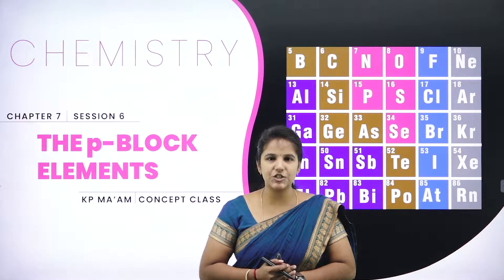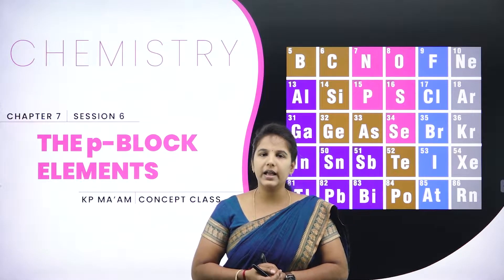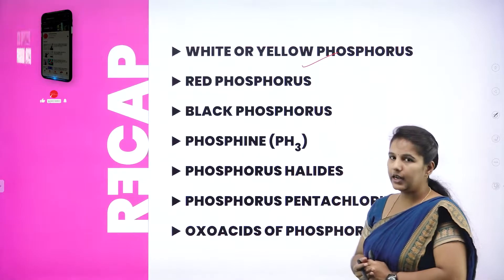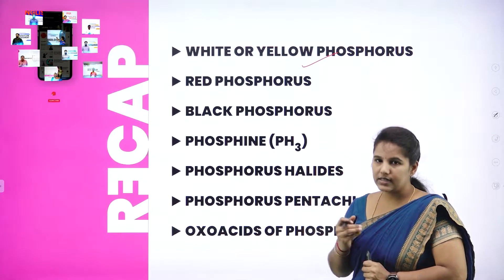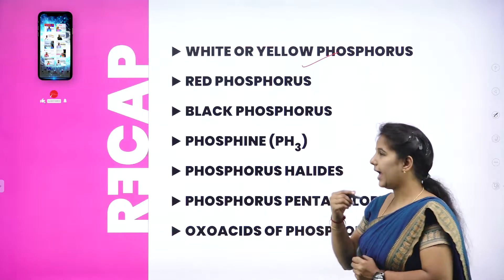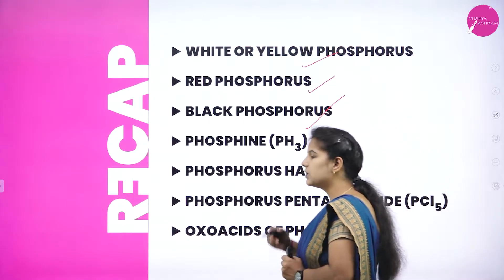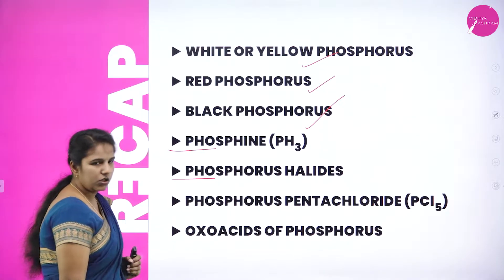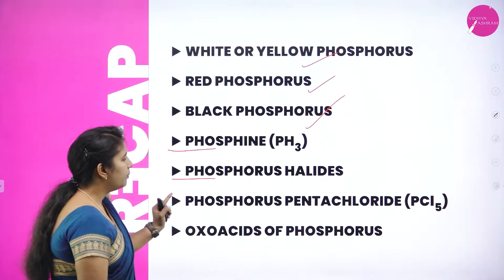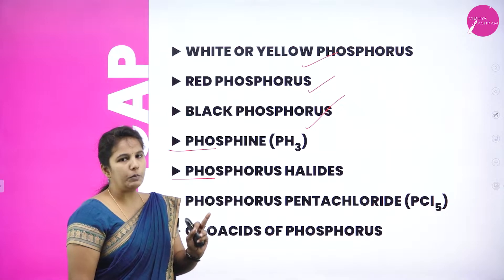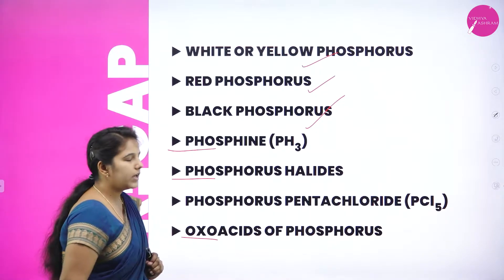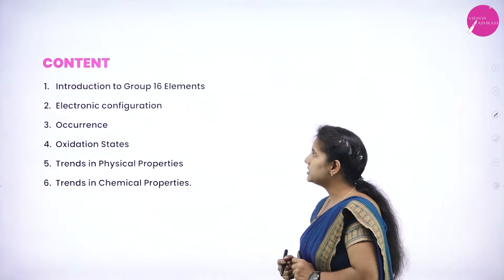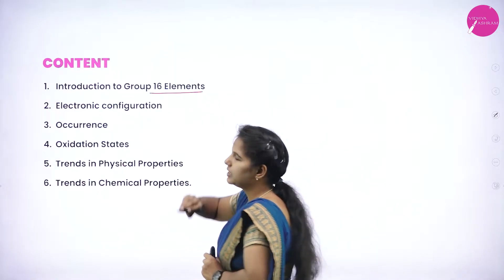In our last discussion, we were dealing with the unit called P-block elements. Under this unit, we discussed white and yellow phosphorous in detail. We learned about three types: white, red, and black phosphorous. In addition, we learned about compounds of phosphorous — phosphine, phosphorous halides, phosphorous pentachloride, and oxo acids of phosphorous. Today, let us move on to the next topic: group 16 elements in the periodic table.